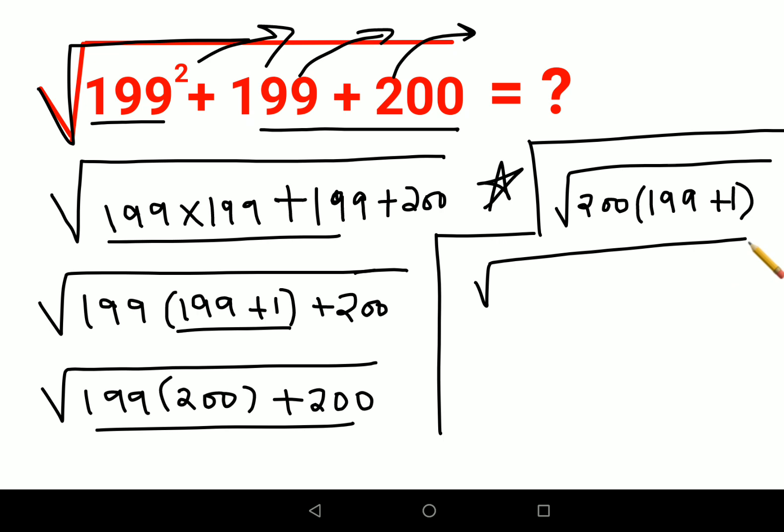So square root of 200 into 200. This eventually comes out to be square root of 200 squared. The square and the root get cancelled, you are just left with 200. That is the answer for this particular question.